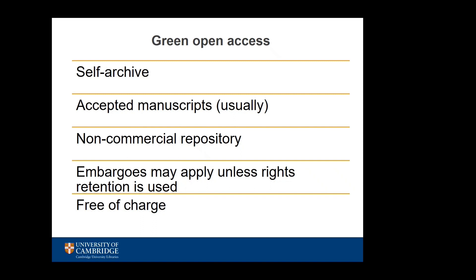Most publishers have a self-archiving policy in which they will stipulate the period of time following the publication of a paper that the accepted manuscript or published paper permitted by the publisher can be made available in a non-commercial repository, and this is called an embargo period. The policies can be found on the publisher's website, but also on other websites like Sherpa/RoMEO.